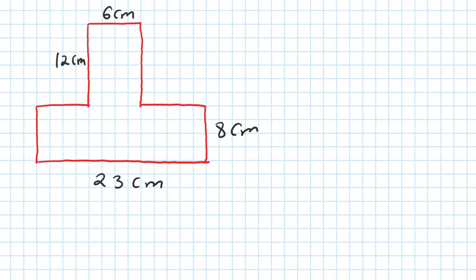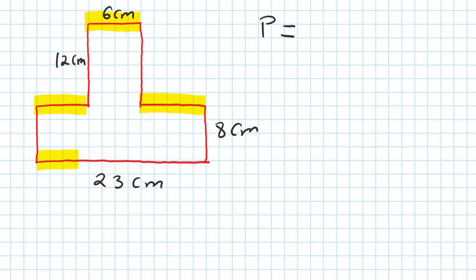First of all, let's find the perimeter of this shape. P equals... look at this - this side length here, add this one, and add this one here, is exactly the same as this length all the way from here to here. So we go 23 times 2.